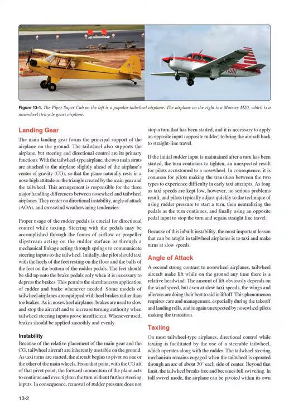The main landing gear forms the principal support of the airplane on the ground. The tailwheel also supports the airplane, but steering and directional control are its primary functions. The two main struts are attached slightly ahead of the airplane's center of gravity (CG), so the plane naturally rests nose-high on the triangle created by the main gear and tailwheel. This arrangement produces three major handling differences: directional instability, angle of attack (AOA), and crosswind weathervaning tendencies.